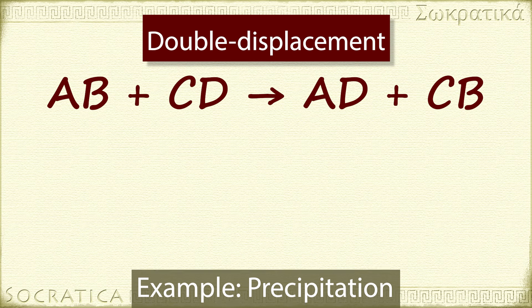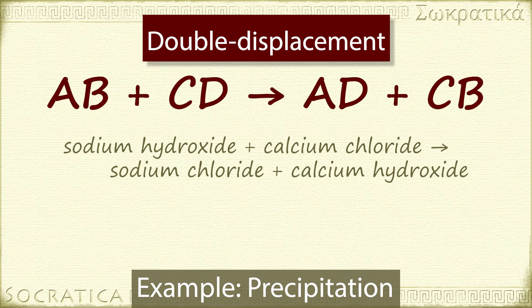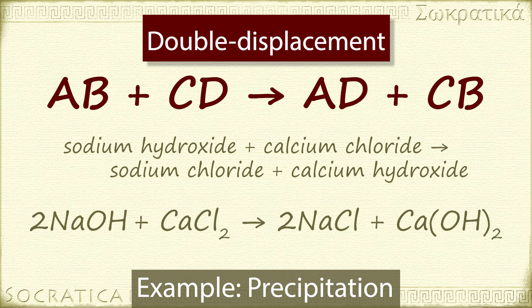So, let's look at a double displacement reaction where a precipitate forms. Sodium hydroxide and calcium chloride react to form sodium chloride and calcium hydroxide. The balanced chemical equation is 2NaOH plus CaCl2 yields 2NaCl plus Ca(OH)2. You can see how it matches the general form of a double displacement reaction. AB plus CD yields AD plus CB.